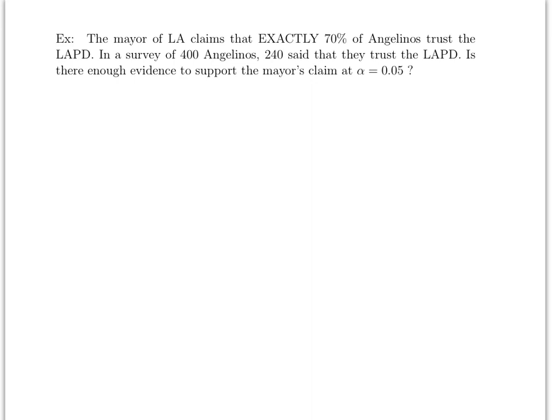In this example we have the following: the mayor of LA claims that exactly - so this is a key word to emphasize that we're going to have a two-tails test, which remember means the alpha is going to be divided by two - of Angelinos trust the LAPD. So therefore the claim, when it's two tails...